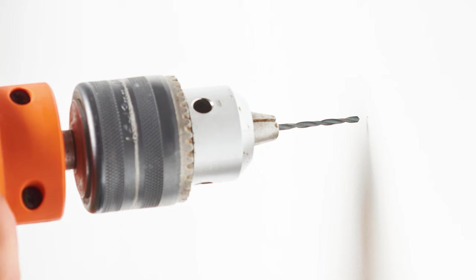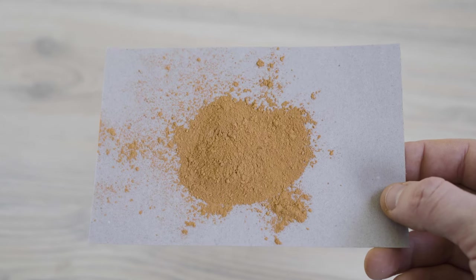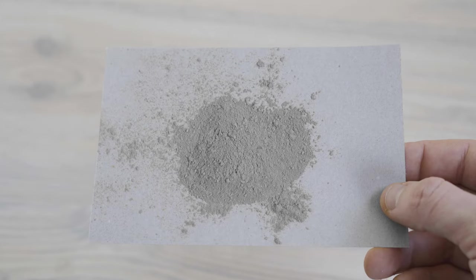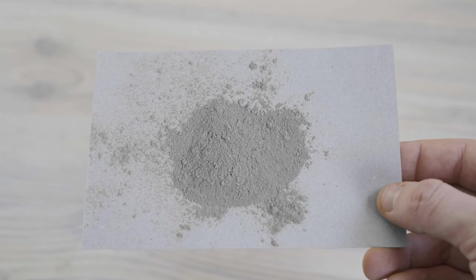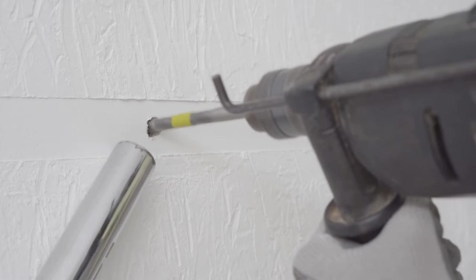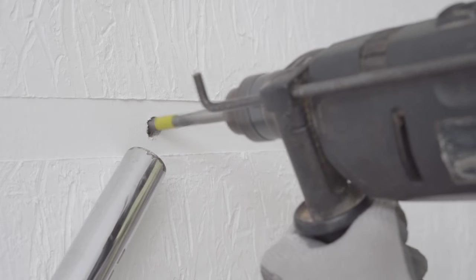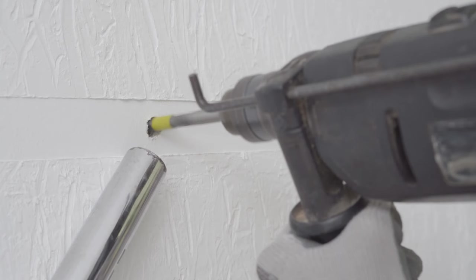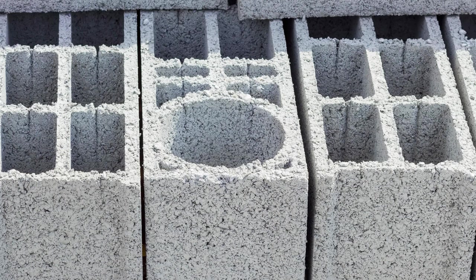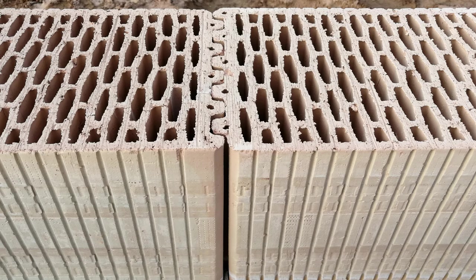For instance, red drilling dust typically indicates brick material, and fine white drilling dust indicates concrete. If the drilling progress varies, starting slow, then suddenly speeding up, and then slowing down again, it indicates a perforated stone material. Perforated stone refers to a type of stone that contains air chambers or voids within its structure.